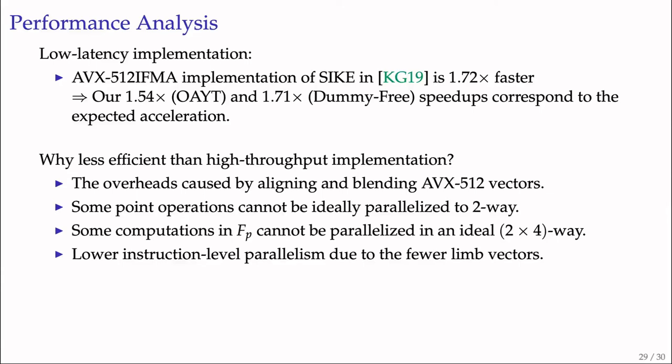There are several reasons the two-way latency-optimized implementation is less efficient than throughput-optimized: overheads caused by aligning and blending AVX-512 vectors in two-way curve and isogeny operations; some point operations cannot be parallelized in an ideal two-way fashion due to dependencies of internal field operations; some computations in field operations, for example complete carry propagation, cannot be parallelized in ideal two-times-four-way due to sequential dependencies of instructions; and instruction-level parallelism of two-times-four-way is lower than eight-times-one-way since four limbs are stored in one vector.